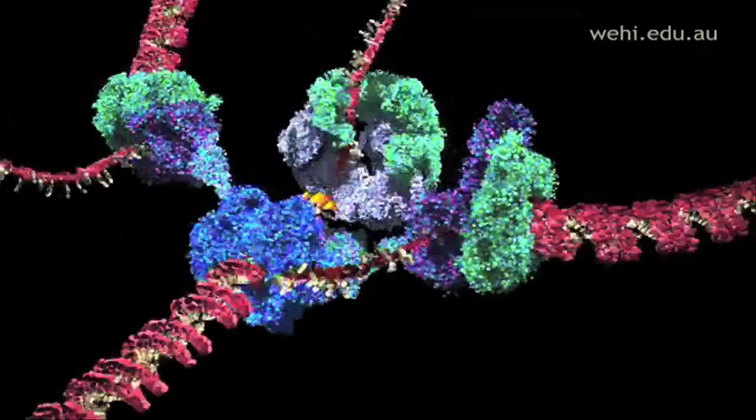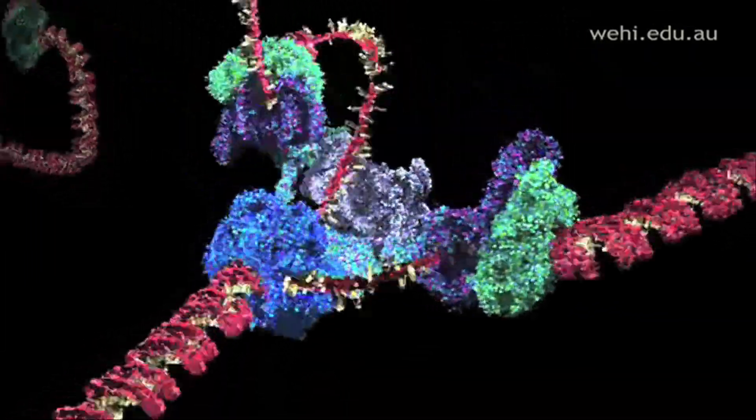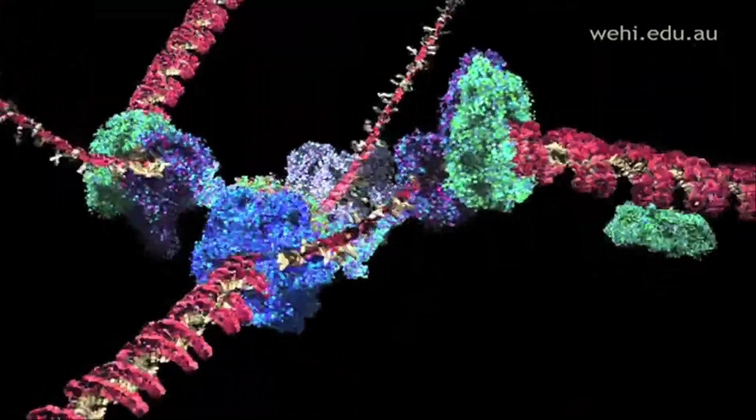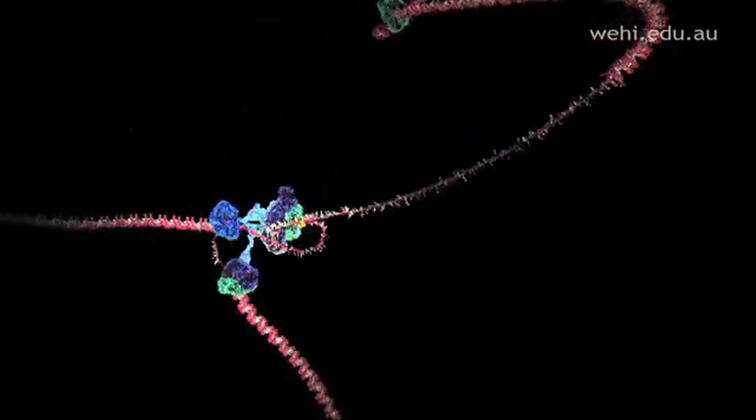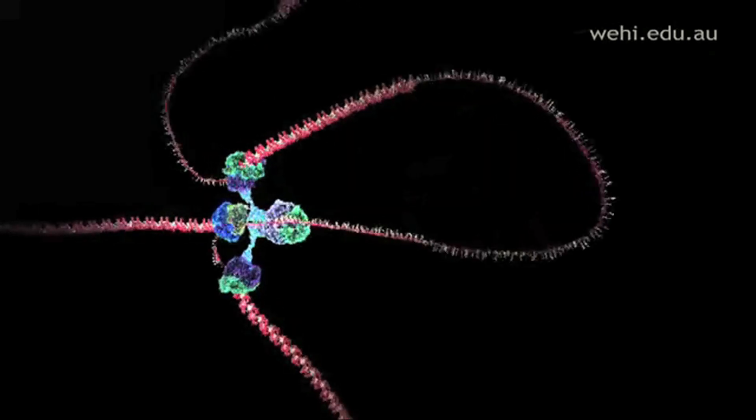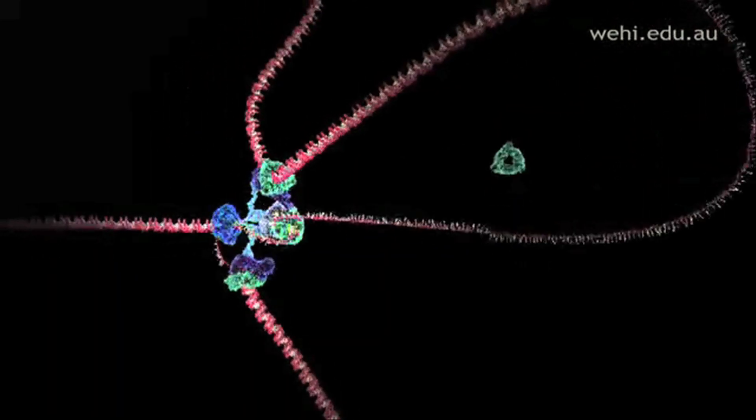The DNA to be copied enters the production line from bottom left. The whirling blue molecular machine is called helicase. It spins the DNA as fast as a jet engine as it unwinds the double helix into two strands.